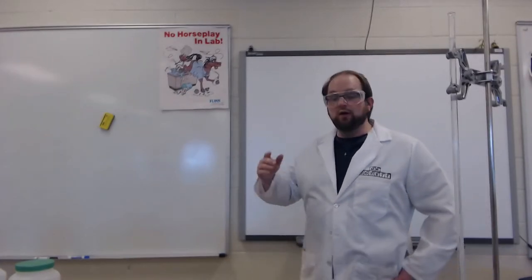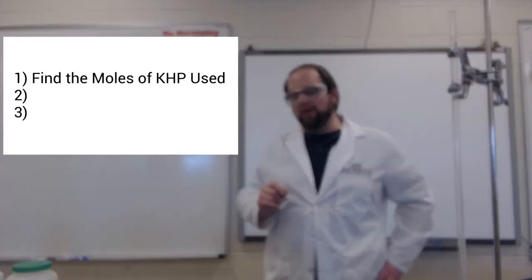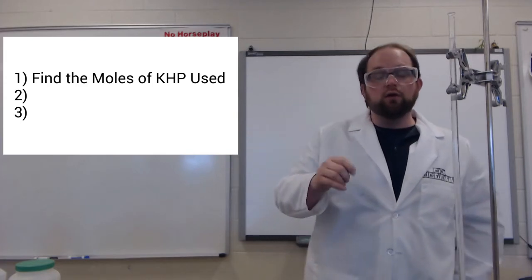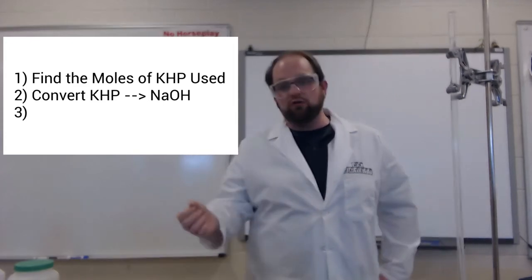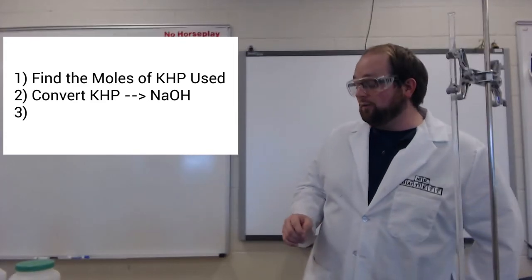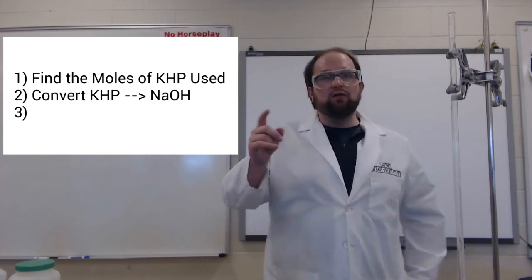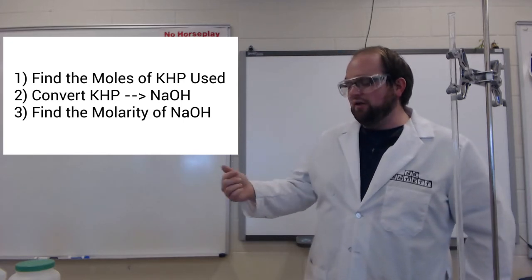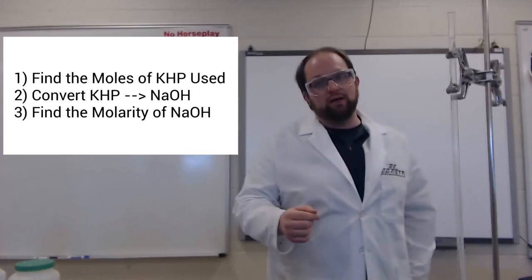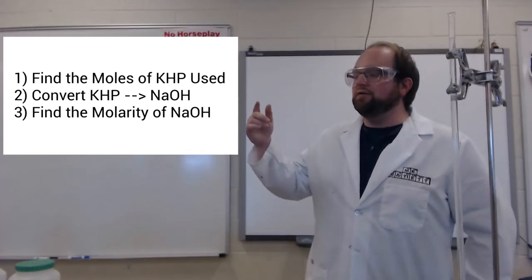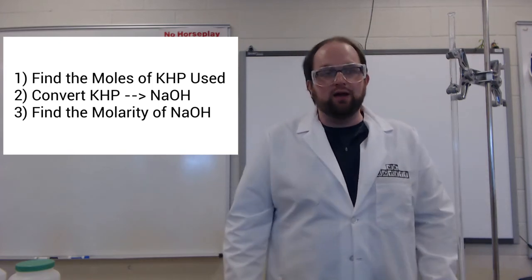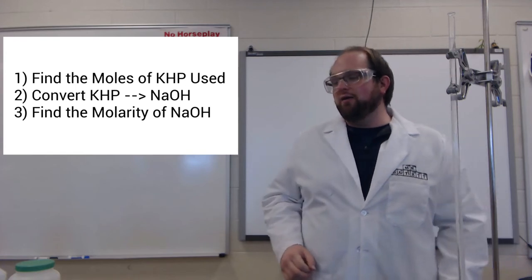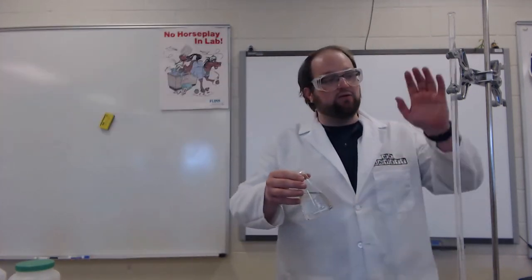From here, you should be able to use our data on grams of KHP to: one, find the moles of KHP used in each trial; two, convert the moles of KHP into moles of NaOH — this is nice and easy because it's a one-to-one relationship. Finally, once you know the moles of NaOH and the volume that was used, you can find the concentration. Remember that concentration is moles over liters, so you may need to do a little conversion. If you can find the average between these two trials, it'll tell you the exact concentration of my sodium hydroxide.